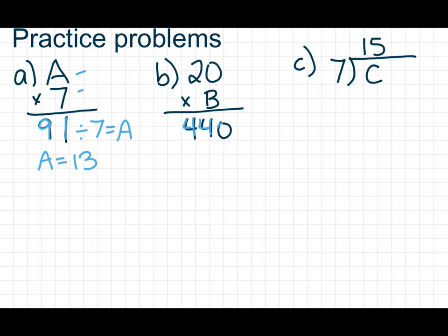Now we have 20 times B equals 440. Again, 440 is our product. So 440 divided by 20 is going to equal B. And again, if we swap these, that should be the same as well. B, therefore, equals 22.